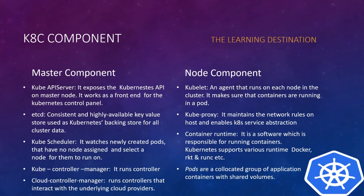Kubernetes components are divided into two categories: master components and node components. In the master component, the first is the Kube API server. It exposes the Kubernetes API on master nodes and works as a front end for the Kubernetes control panel. It takes requests from kubectl — the Kubernetes command-line tool — and passes setup instructions to the rest of the services. Next is etcd: a consistent and highly available key-value store used as a Kubernetes backing store for all cluster data. It acts like a database that keeps records of the entire Kubernetes cluster, similar to how MySQL is used in other applications.